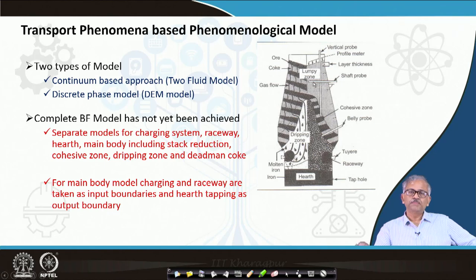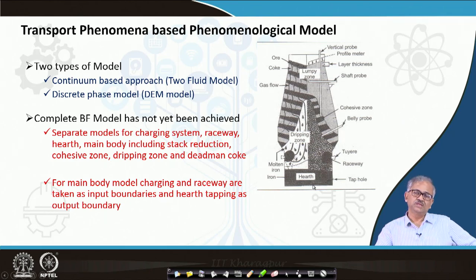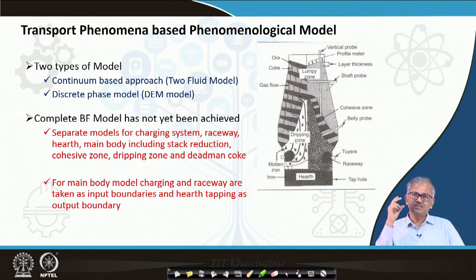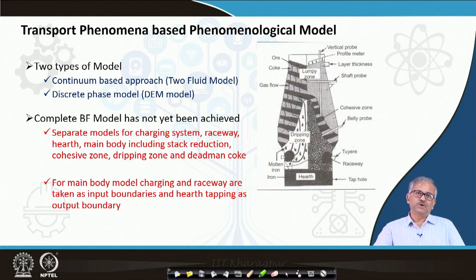The blast furnace has a lot of different zones. So far whatever models have been made, you have a charging system, a raceway which can be modeled separately, a hearth with a dead man — whether sitting or floating — and a coke bed as a porous medium. There is also scope for modeling tapping. The modelers have divided the blast furnace into four parts: charging, raceway, hearth, and the body of the furnace. The body includes the granular zone with solid-gas interaction, the cohesive zone where softening takes place, and the dripping zone.